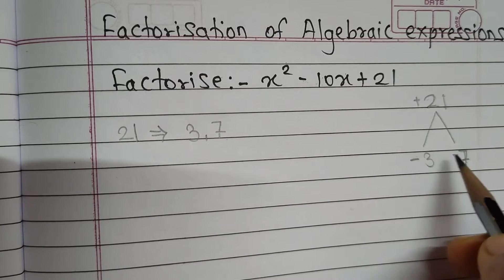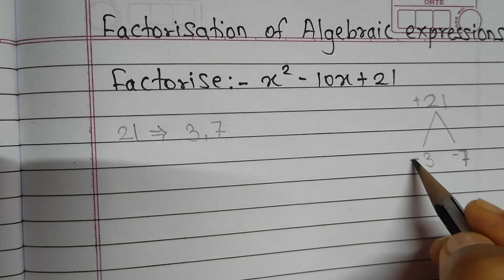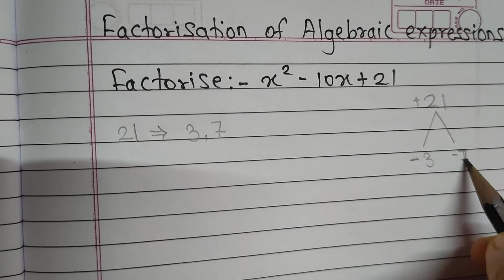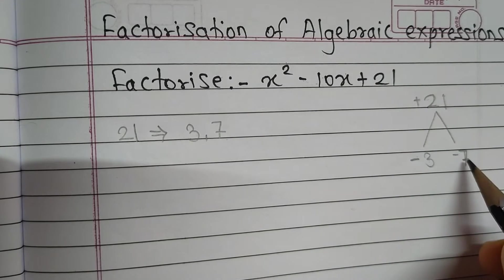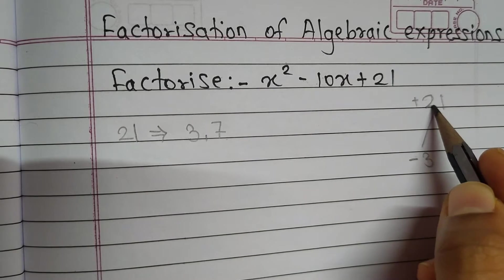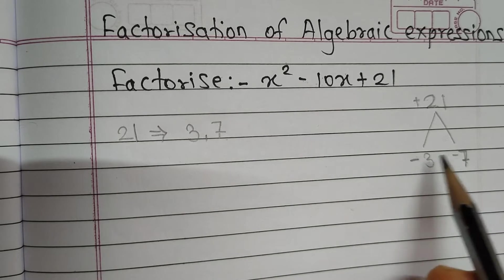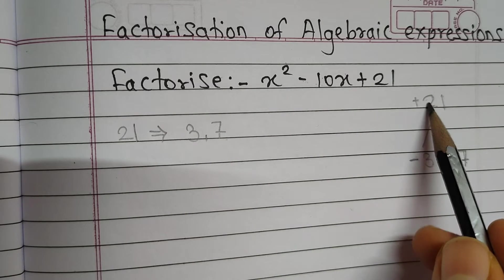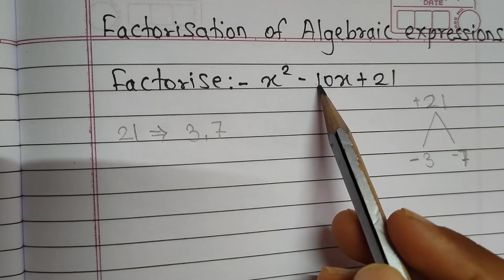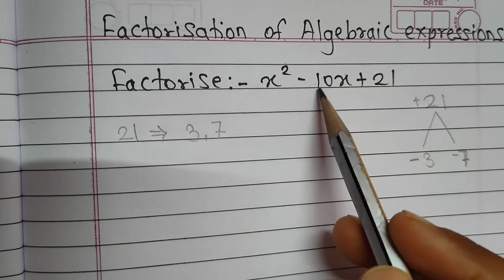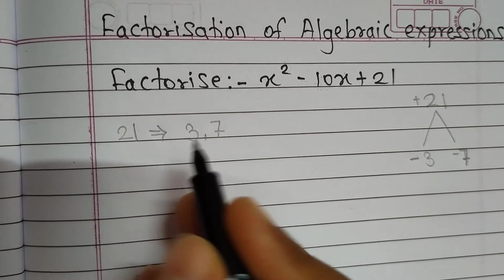Why have we considered minus and minus, and not plus and minus? Because minus 3 multiplied by minus 7: minus into minus gives you plus, and 3 times 7 is 21, so minus 3 into minus 7 equals plus 21. And minus 3 plus minus 7 gives you minus 10. So these are our two factors: minus 3 and minus 7.